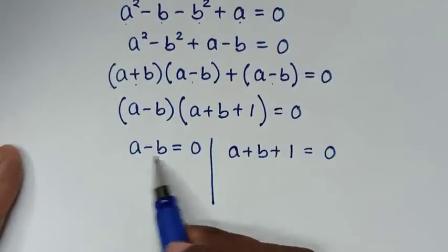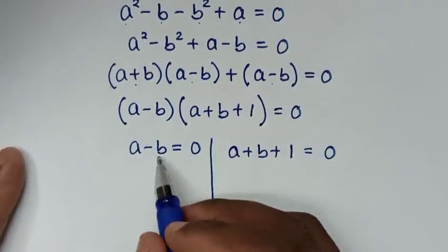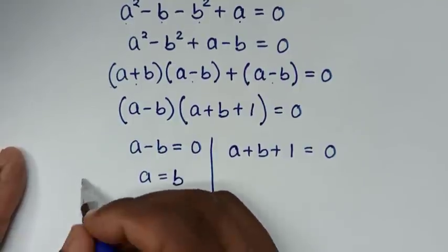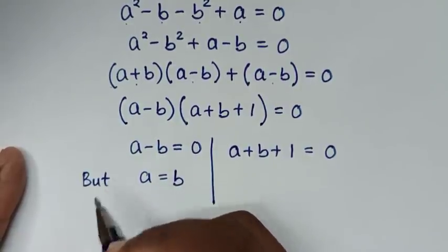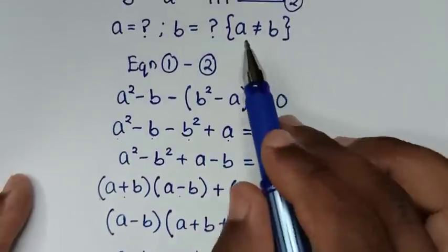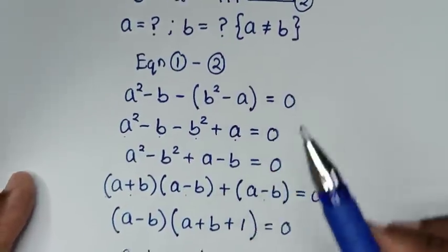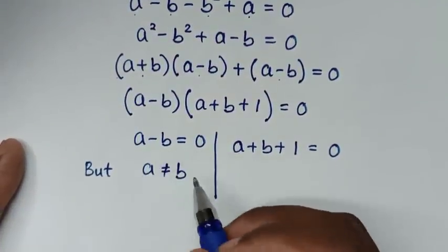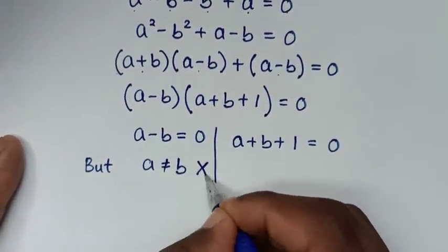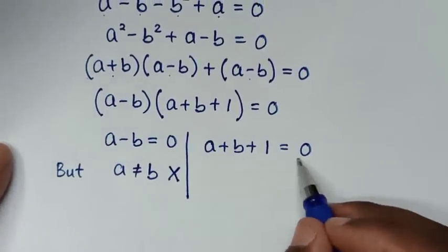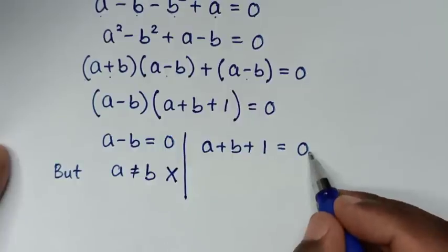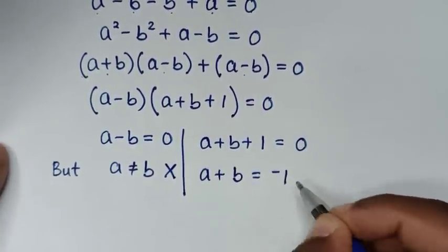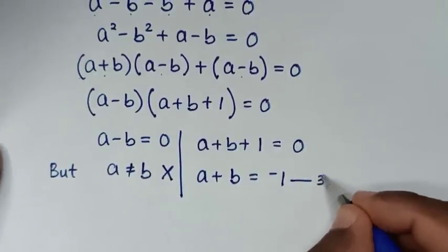From the first solution, a minus b equals 0 gives a equals b. But we recall the condition from the problem that a is not equal to b, so this solution is rejected. We continue with the second solution: a plus b equals negative 1. We call this equation 3.